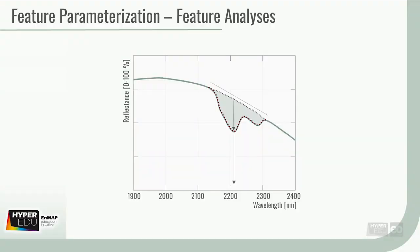A more sophisticated way to parameterize features is the analysis of the actual shape, including, for example, band position, shoulder positions, feature width, depth, and area. This is a little more complicated to assess, but helpful tools exist, like ENSOMAP in the ENMAP box.